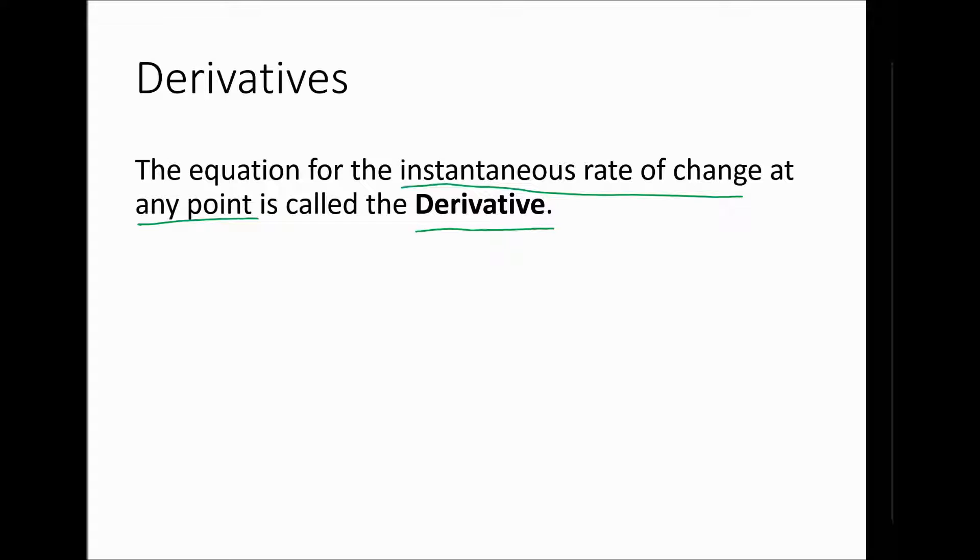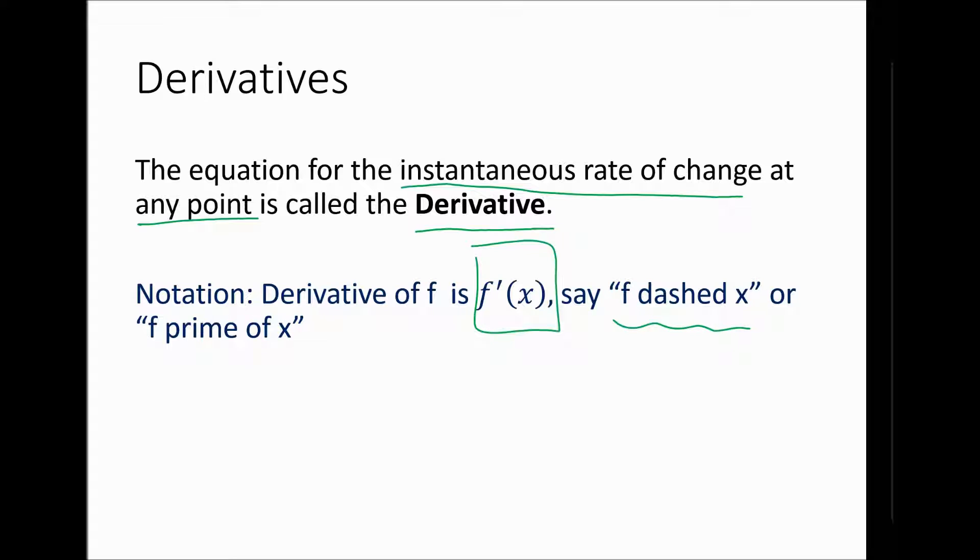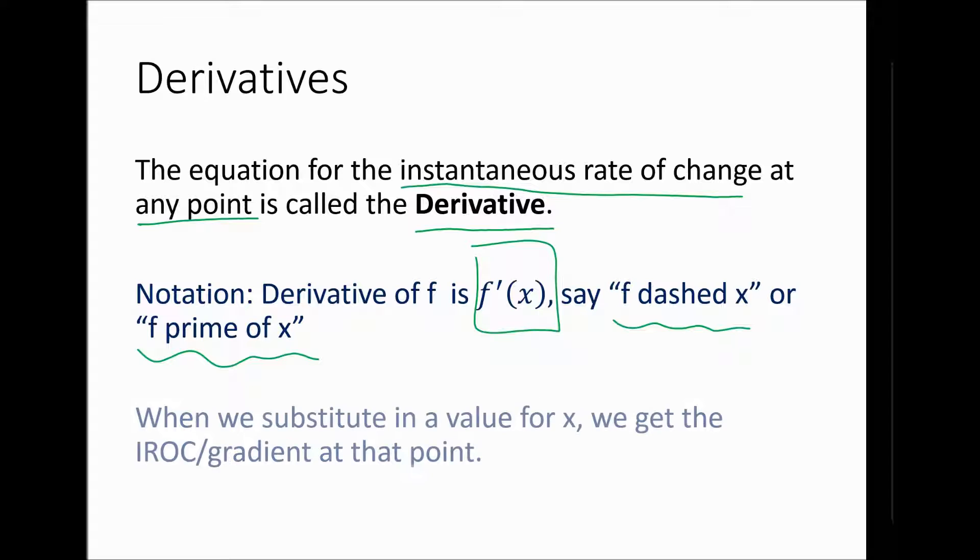That function is going to be called the derivative. So what a derivative is, it's a function that represents the gradient of the original function. A little bit of notation. The derivative of f is written like this. We say it in two ways. The Australian way, which I will probably forget, f dashed x, or Canadian way, I apologize when I slip back into it, f prime of x. Make sure you don't write a negative one. It's very, very different. That's the inverse. This is the derivative. It's kind of like an apostrophe. So f prime of x, or f dash x. That's what the derivative is.